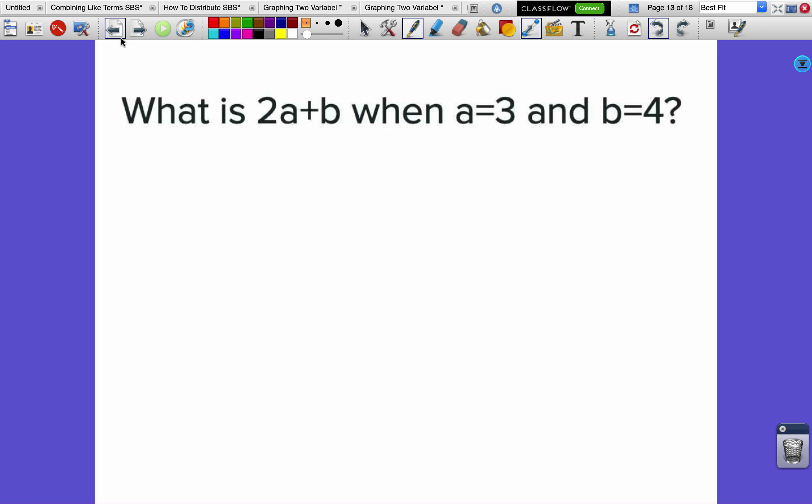What is 2a + b when a = 3 and b = 4? We're going to draw an arrow from a = 3 to the a, an arrow from b = 4 to the b. When we do the substitution, we're going to use parentheses: 2(3) + (4).